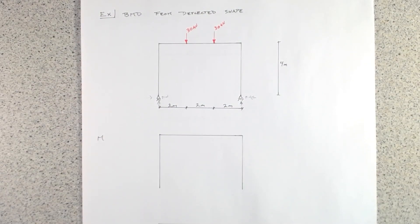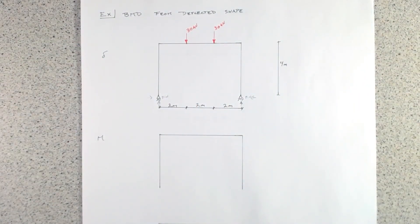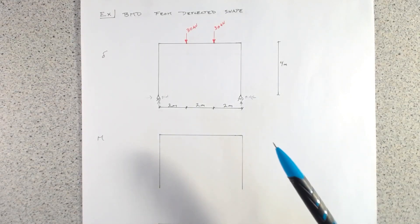The first thing we're going to do is draw the deflected shape of this structure — we'll put a little delta here — and then from that deflected shape we'll work out the bending moment diagram. One of the questions always asked is: what does the deflected shape look like and how do we start? We have a few rules, and if ever we're lost we can stick to those. We'll ultimately draw the deflected shape in red, but we'll work in pencil first because we might need to iterate.